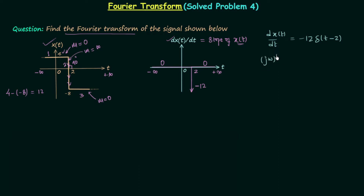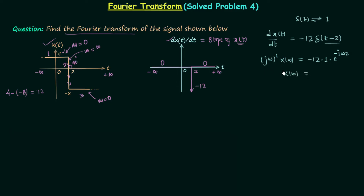From the property of differentiation, j·omega to the power 1 will be multiplied to the Fourier transform of XT. Let's say XT is having the Fourier transform X(omega). So this is what we have on the left hand side, and on the right hand side we will have minus 12 multiplied to 1, because delta(T) has the Fourier transform equal to 1. But here we are having delta(T minus 2), which means we need to use the time shifting property. So we will have negative j·omega·2 in the power of the exponential. Now we will separate X(omega) by dividing both sides by j·omega, giving us minus 12 times e^(−j·omega·2) divided by j·omega.